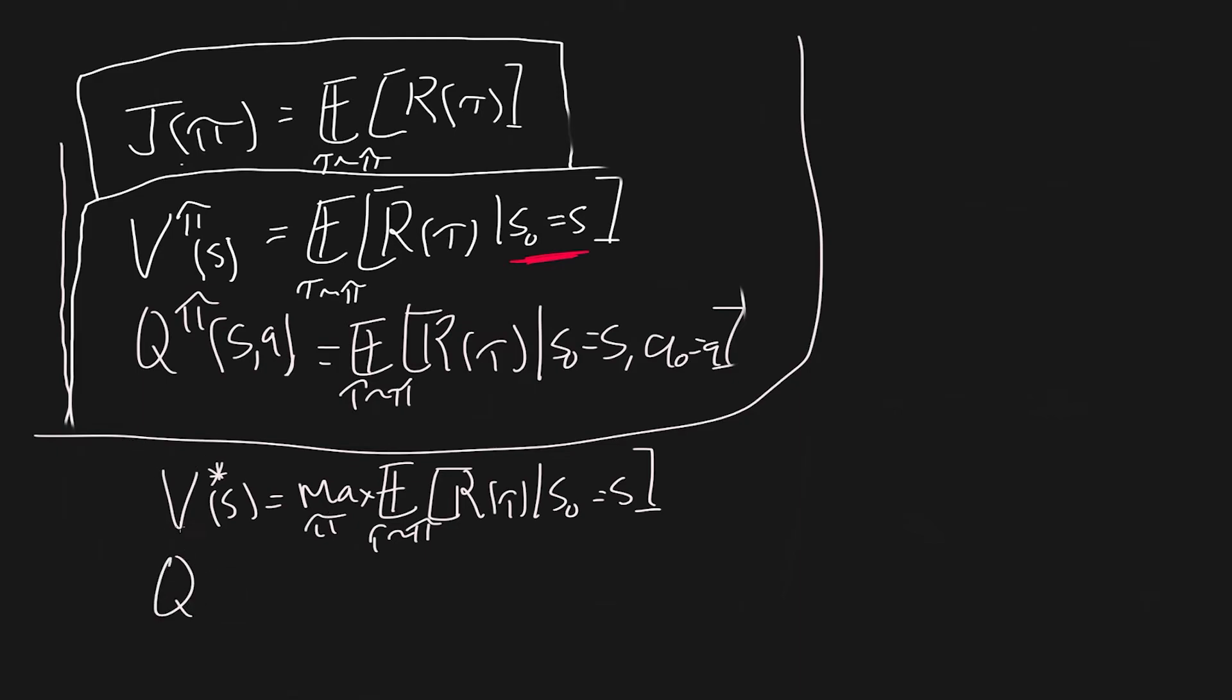And Q values, similarly, Q star of S A equals the max over the policy of the expected trajectory sampled from the policy. So again, this is the same thing. The optimal Q value, or the optimal Q function I should say, we're just trying to find the policy that maximizes the returns for every state action pair. So these are kind of going off what we did last time. This is what we were trying to do with J. We were trying to see what do we want? We want to maximize the expected return, which maximizes J. Well, these are now two other things we can do. We can get the optimal Q value or the optimal Q function or the optimal value function.